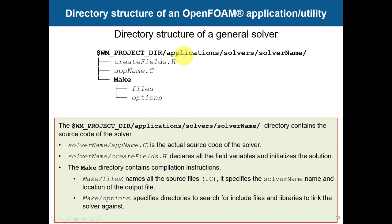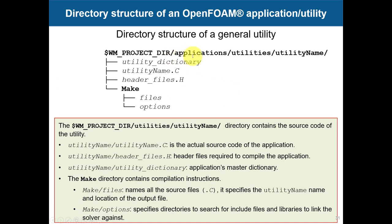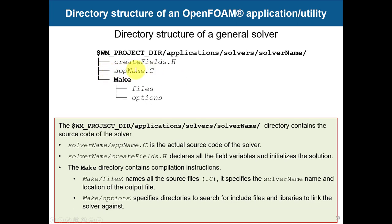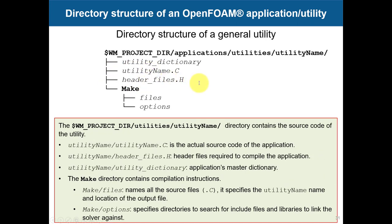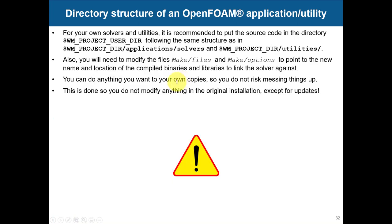Now let's look at the directory structure of an application or utility. Going to applications/solvers, you'll see the solver name and then a very specific data structure. For utilities it's similar. You have a .C file and an .H file. For solvers, comments and descriptions are usually found in the .C file; for libraries or utilities, they may also be in the .H file. Open both files to find the description.